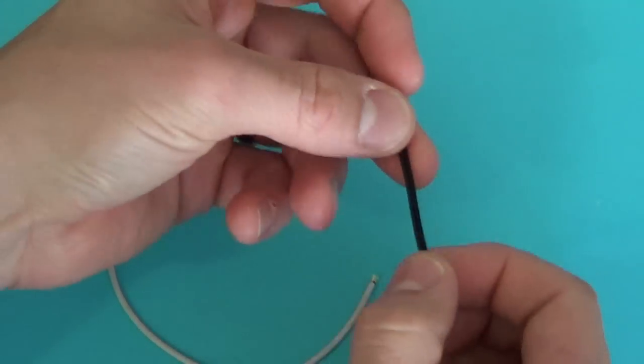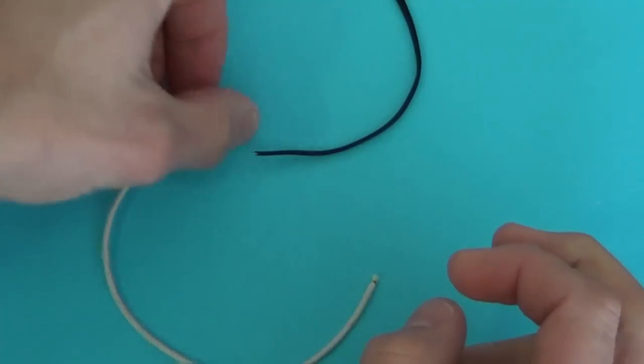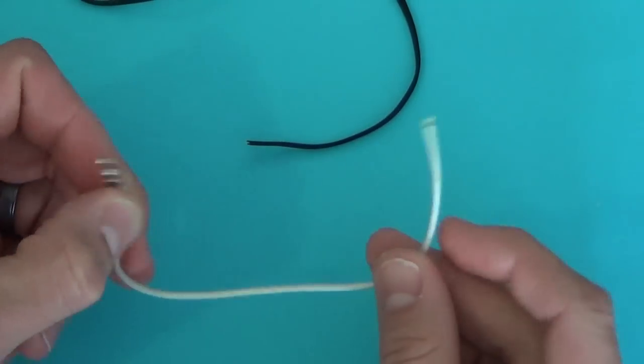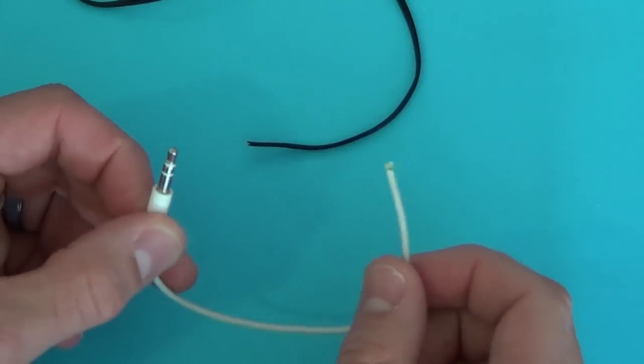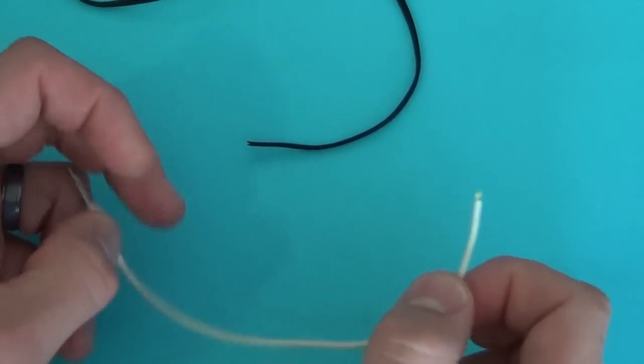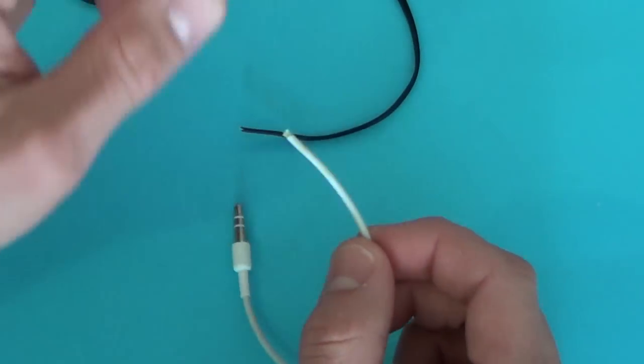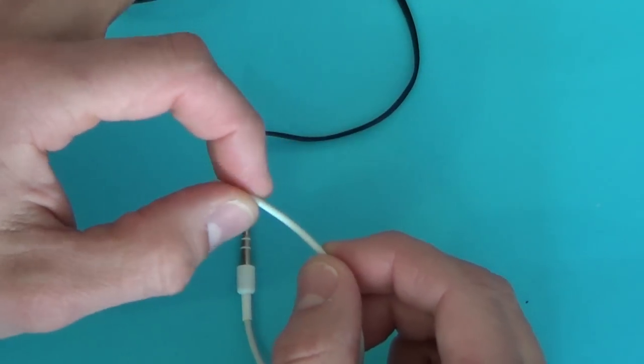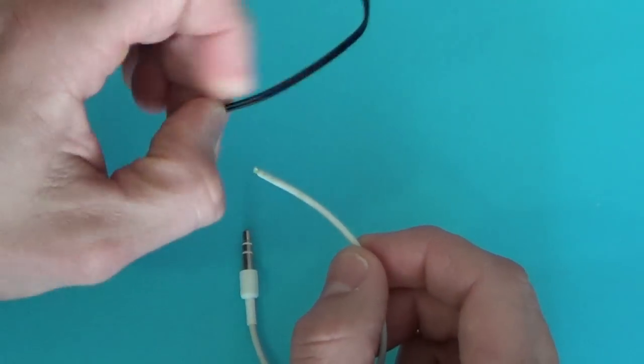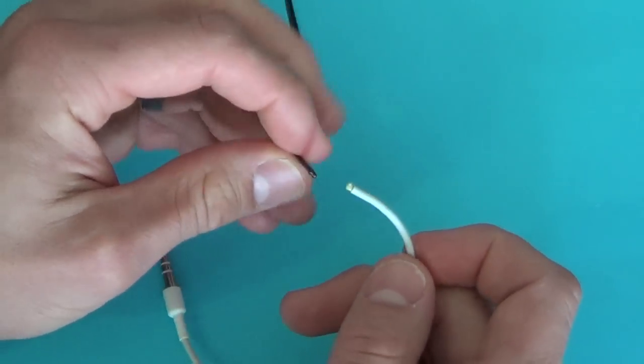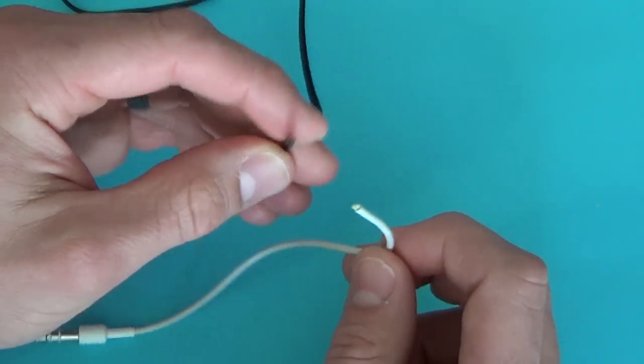Here we have the Sony headphones that I'm trying to repair and the black wire with the end of the iPod earbud plug that works. What I'm going to do is use my wire strippers to strip off this rubber coating on the outside of each of these wires and expose the wires within.